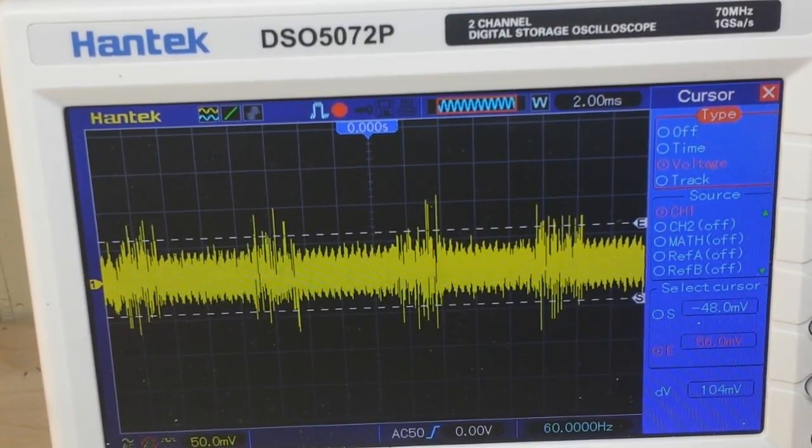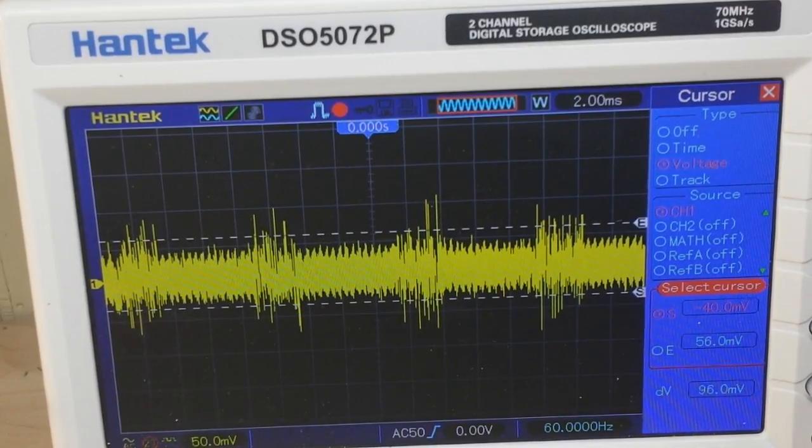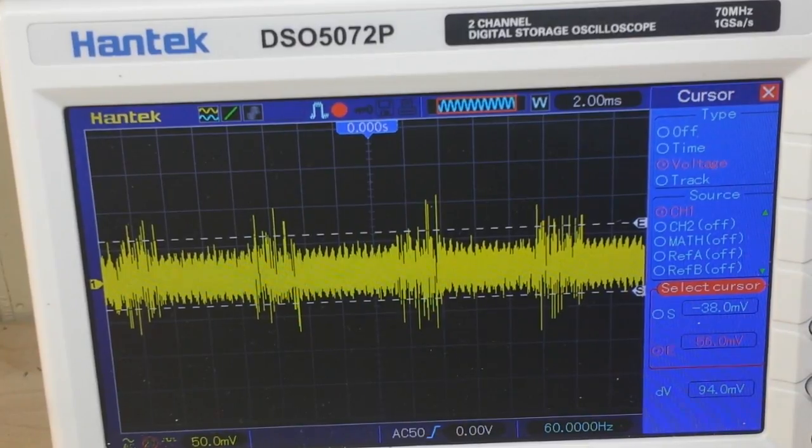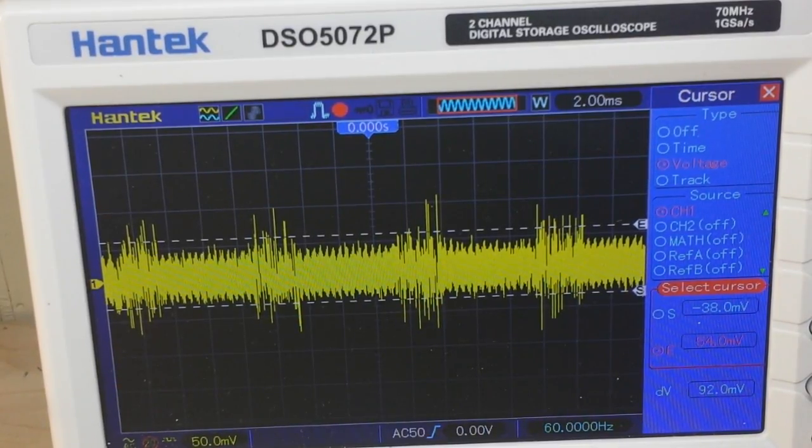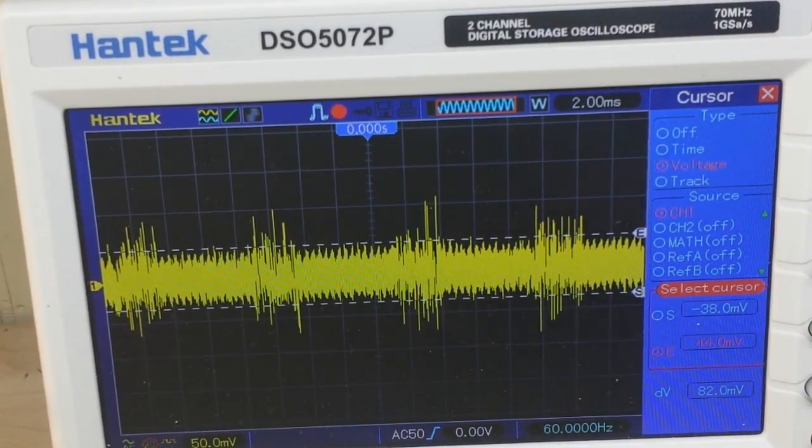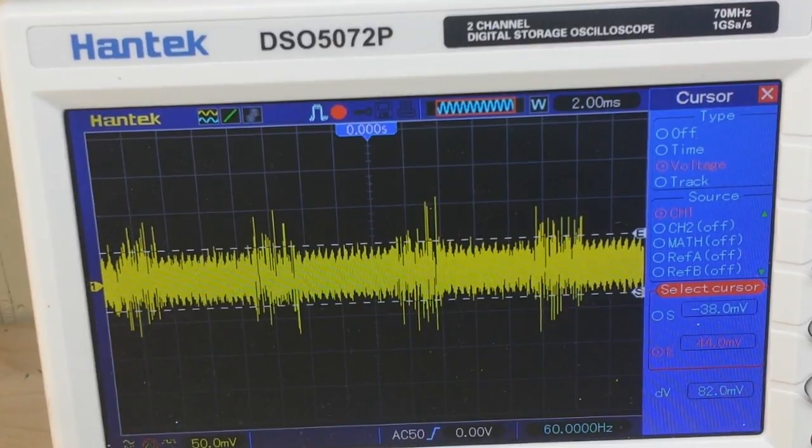For voltage. And we'll adjust our start cursor and our end cursor. And we now have 82 millivolts peak to peak.